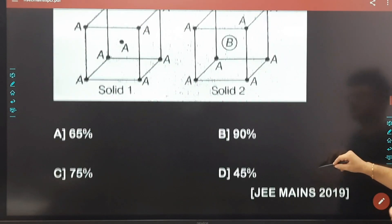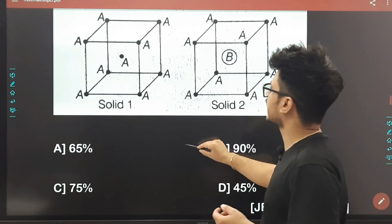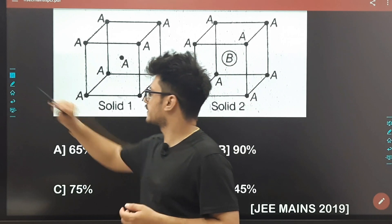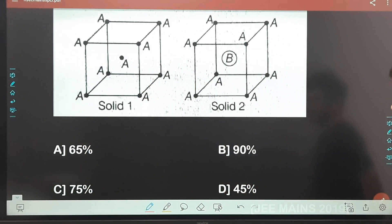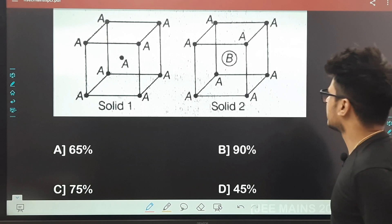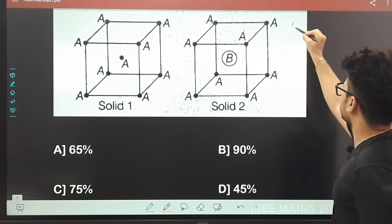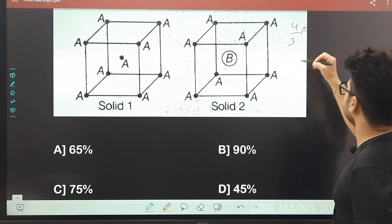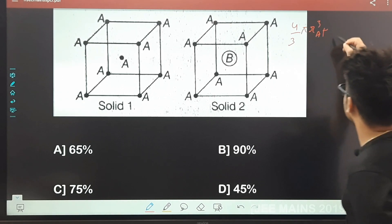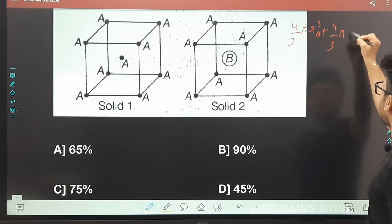Badhiya hai, chalo karte hai solve. Thoda sa calculation hai. Concept yahan par ye hai ki humein chahiye packing efficiency. Packing efficiency simply 4π/3 rₐ³ plus 4π/3 rᵦ³, divided by a₂³. Main A aur B ke radii aise maan raha hoon.